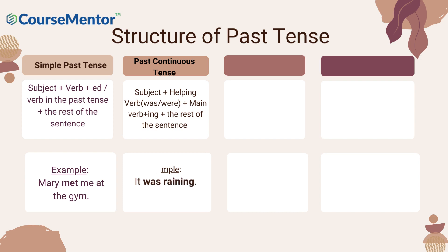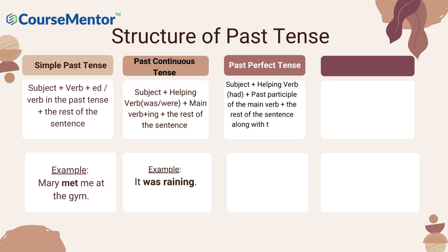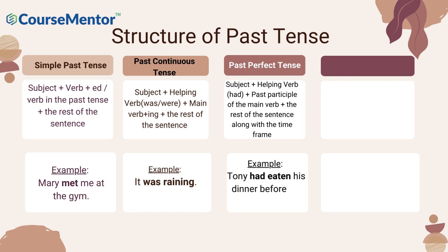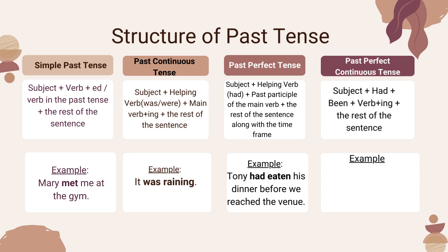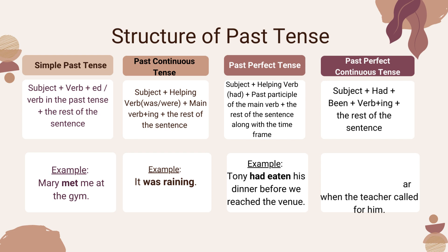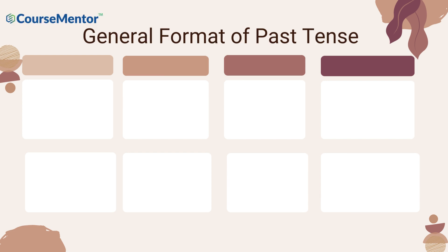Past perfect tense: subject plus helping verb 'had' plus past participle of the main verb plus the rest of the sentence along with the time frame. For example: 'Tony had eaten his dinner before we reached the venue.' Past perfect continuous tense: subject plus 'had' plus 'been' plus verb plus '-ing' plus the rest of the sentence. For example: 'Johnny had been practicing the guitar when the teacher called for him.'